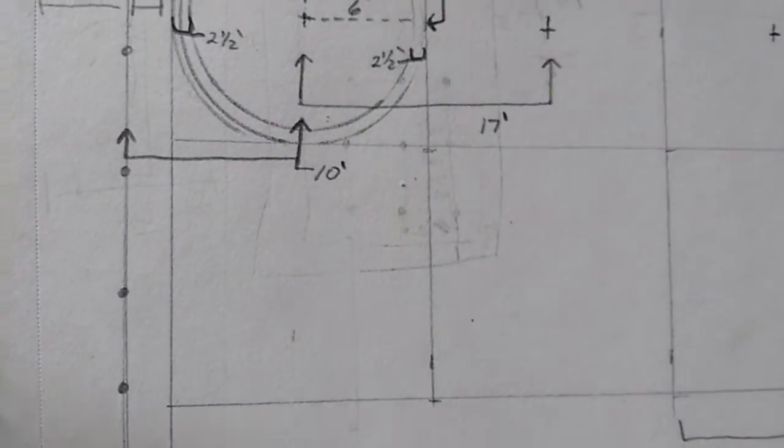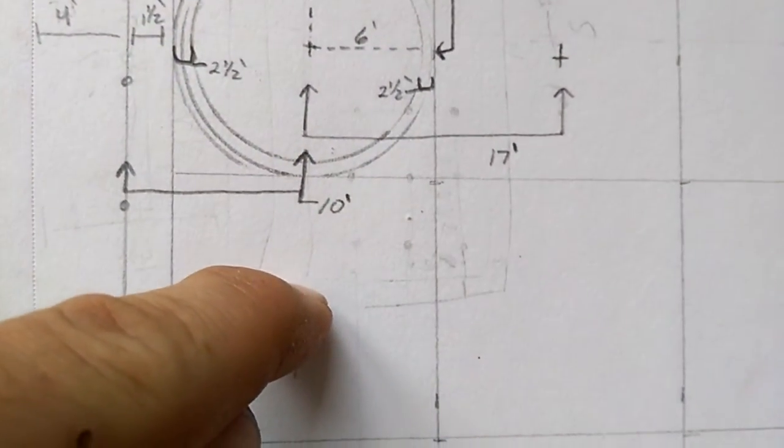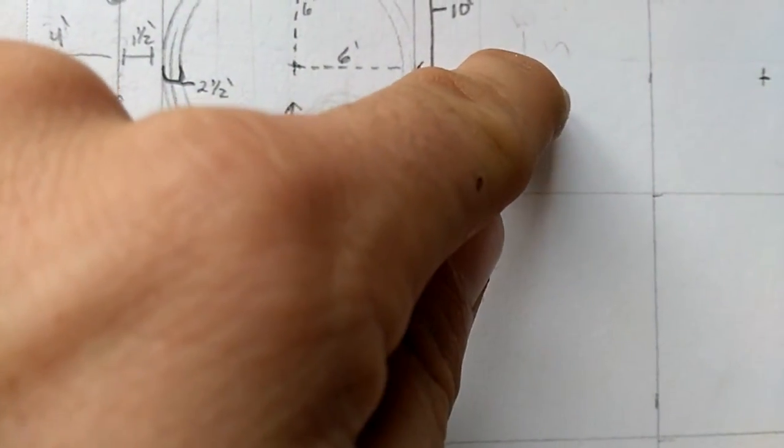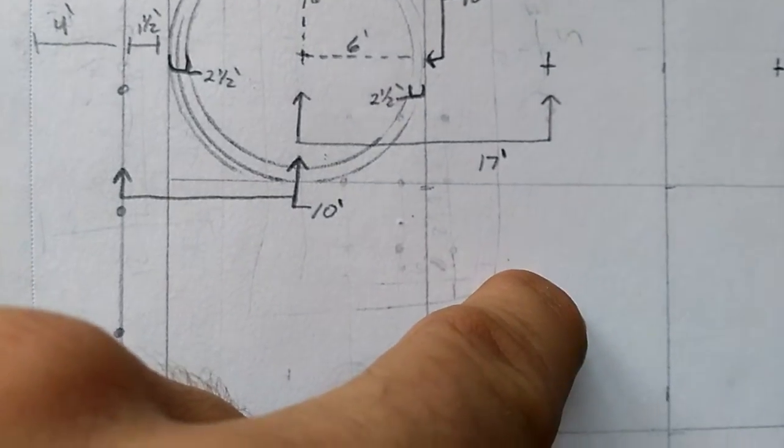Once you've established that, all you have to do is measure 17 foot this way and 17 foot this way and you'll be able to know where your anchor goes here.